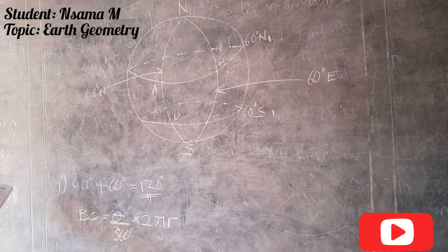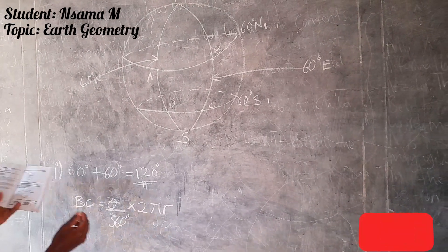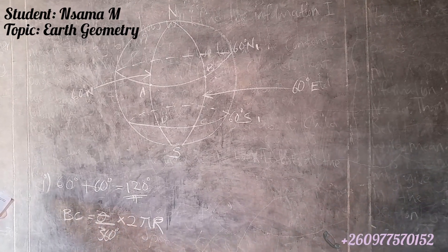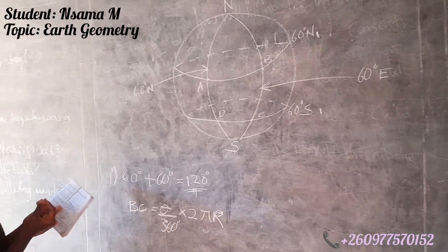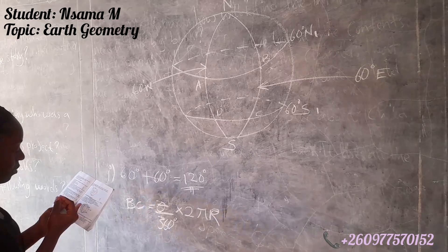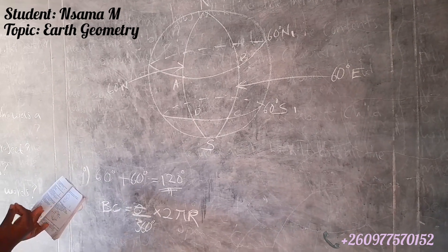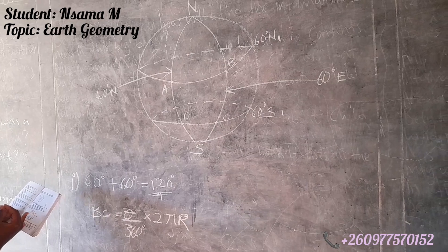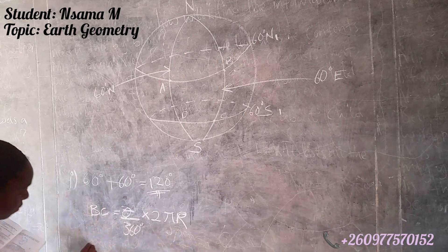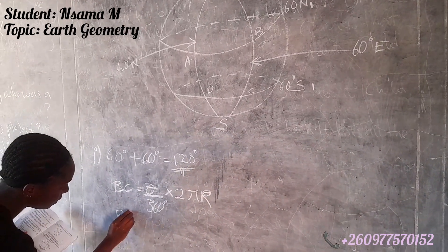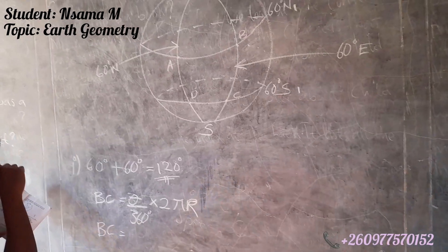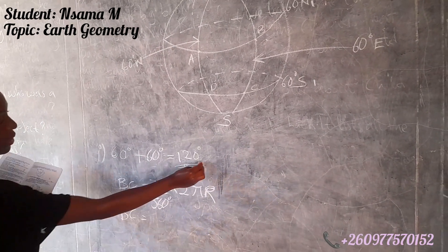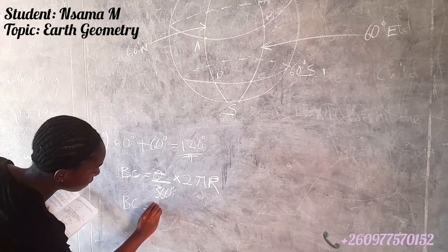We are going to substitute. Since our pi is 3.142 and our R is 37, we write BC equals — we are going to get our 120, which we found, and put it as our figure.